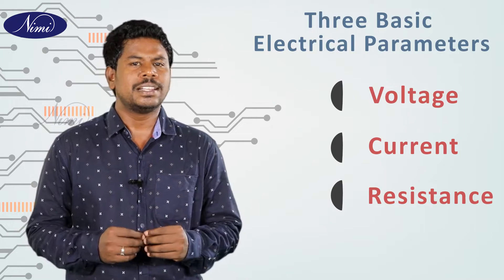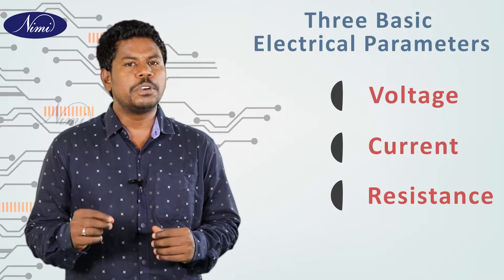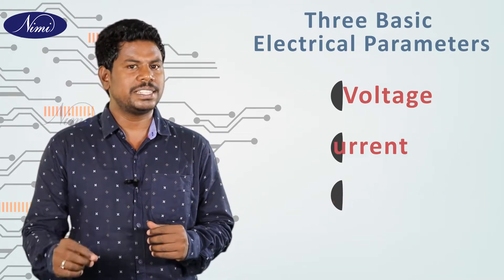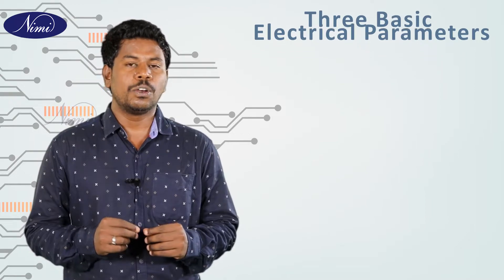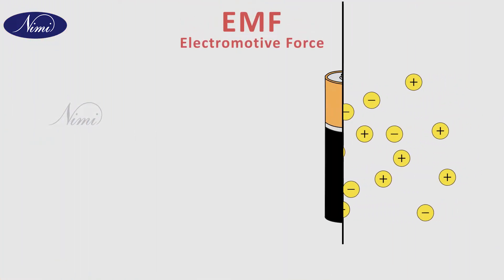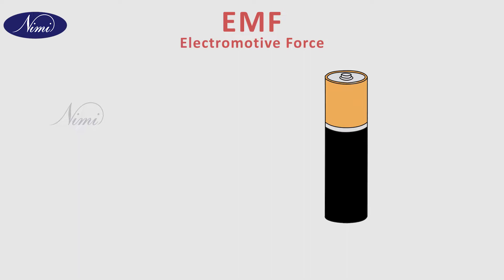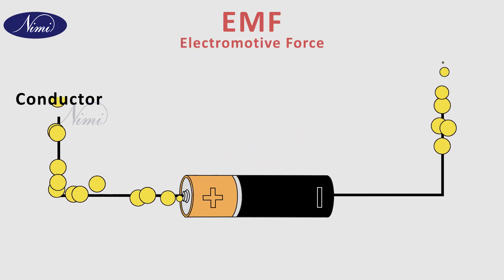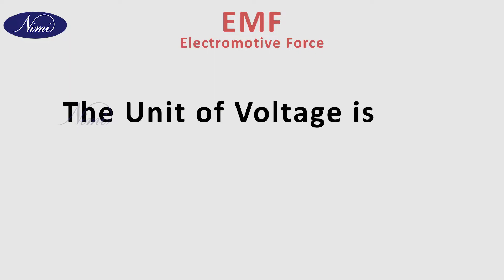What is voltage? Simply, voltage is a force, or pressure, or potential difference. Voltage is also known as EMF — electromotive force. It is the force required for electron movement in a conductor. The unit of voltage is volt, and it is denoted by the letter V.